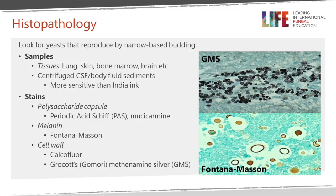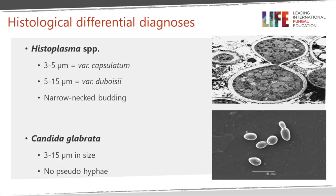On tissue, cryptococcal yeasts have a narrow-based bud unlike blastomyces, and PAS stain produces quite a marked pink colour, as does Mucicarmine, which is a specialised stain for cryptococcus used occasionally. Cryptococci also produce melanin, which can be visualised on the Fontana-Masson stain. With direct microscopy using calcofluor or blankophor, this organism also has a bright capsule which can be visualised with these fluorescent brighteners.